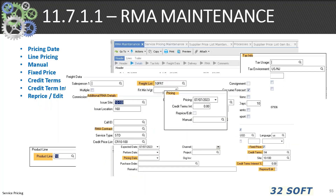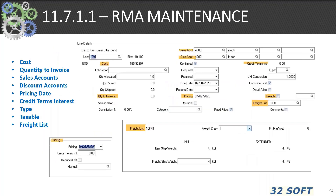The 11.7.1.1 RMA maintenance is interestingly enough the most complex menu in QAD — over 20 frames and more than 150 fields. Be aware of the price-related elements: fixed price, charge type, pricing date, line price, manual credit terms and interest, and repricing or edit. There are a few more elements that affect price and cost in RMAs: quantity invoiced, sales accounts, pricing date, type, taxable, and freight list.